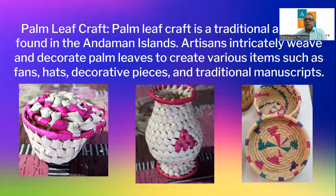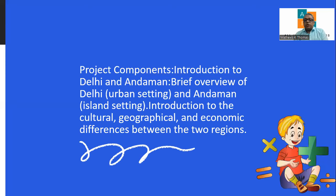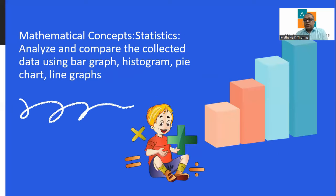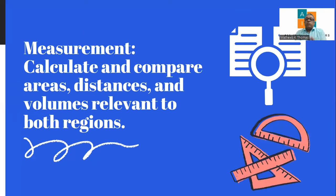Baskets made from palm leaves, and pottery articles using traditional techniques with intricate patterns and designs — these are all examples of Andaman crafts. As I said, there should be a lot of similarities and differences noted in the project. The project components include an overview description, data collection, and the statistical part — bar graphs, histograms, pie charts. Now we come to calculations and measurements, where we compare the geographical area of Delhi as compared to Andamans.